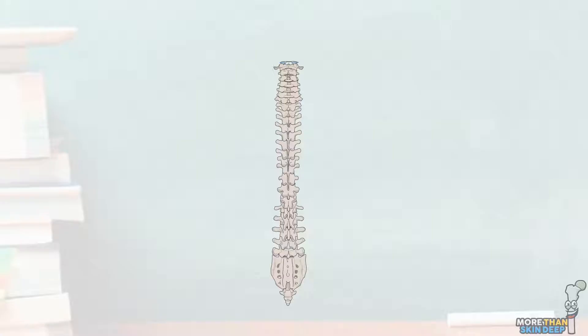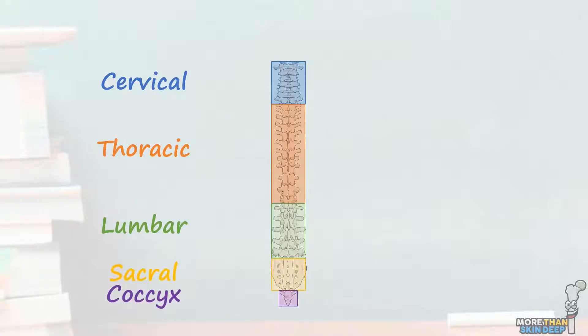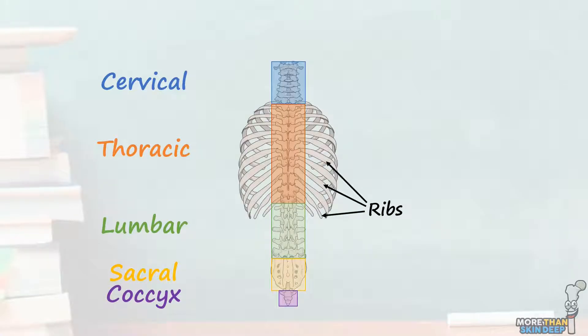The bony subunits of this column are known as the vertebrae. There are 7 in the cervical or neck spine, 12 in the thoracic or chest spine, and 5 in the lumbar spine. Inferior to this are 5 fused vertebrae forming the sacrum, and lastly the small triangular coccyx. From the thoracic spine come the 12 paired ribs, which curve around anteriorly and inferiorly to form part of the ribcage.